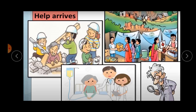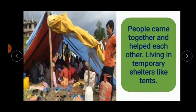After some days, people from the cities kept coming to see what had happened. They came with food, medicines, and clothes. Help came not only from India but from all over the world. People came together and helped each other. People from different groups in the city helped the villagers put up tents for temporary shelter.